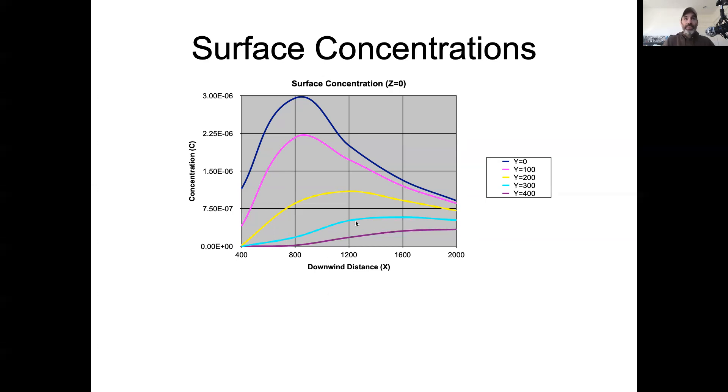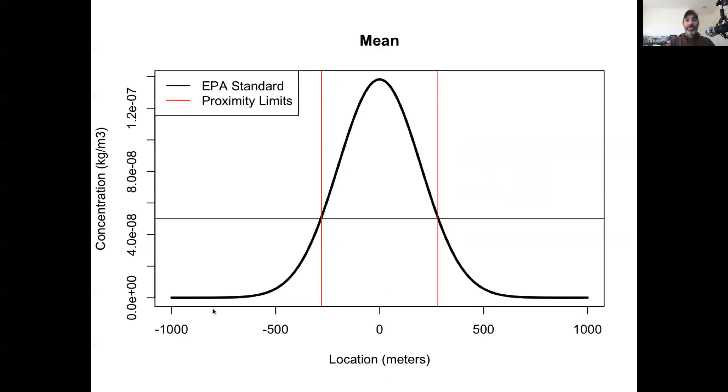Now, if we pick any particular distance, let's say we knew that we were two kilometers downwind, we could then say, at two kilometers downwind, what does the concentration look like as we move out laterally? And so specifically, at each distance downwind, we could make a plot of the lateral dispersion.